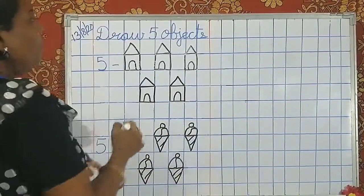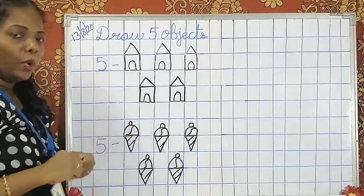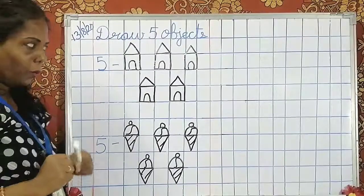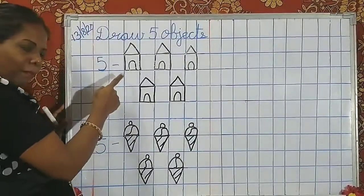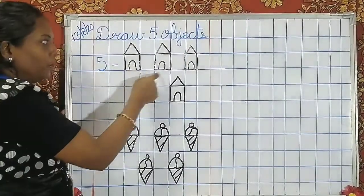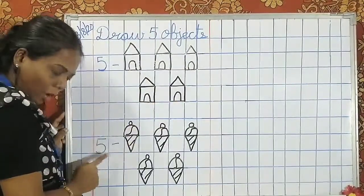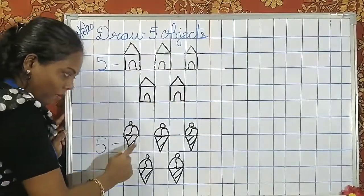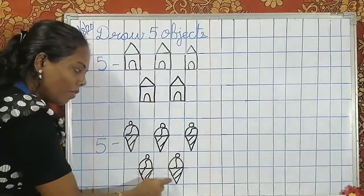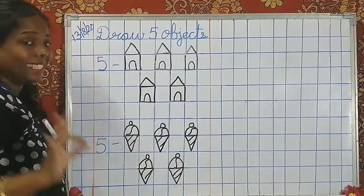Children, you have to draw this in your notebook. Teacher will show you how to do it in the notebook also. Count again: 1, 2, 3, 4, 5 hearts. And how many corn ice creams? 1, 2, 3, 4, 5 corn ice creams. And colour them nicely.